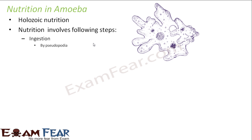Amoeba is a unicellular organism, that is it has only one cell. The type of nutrition which amoeba has is holozoic, meaning amoeba takes in complex organic matter as food. We have studied how amoeba looks in diversity in living organisms in class 9. Now let us see the different steps of holozoic nutrition in the case of amoeba.